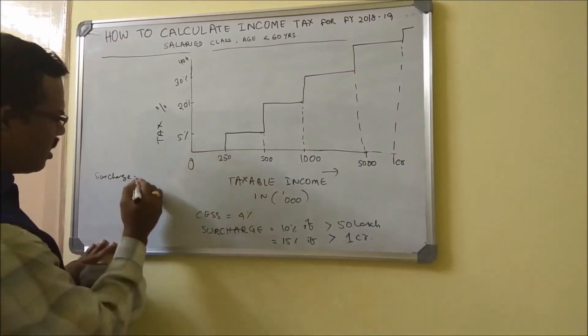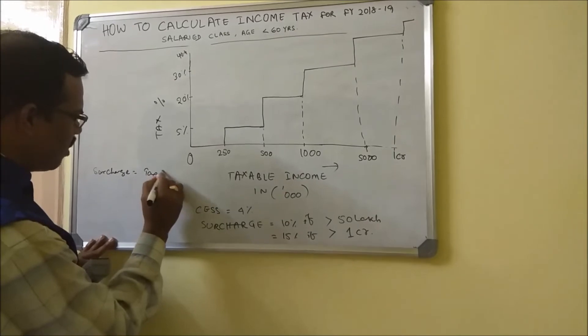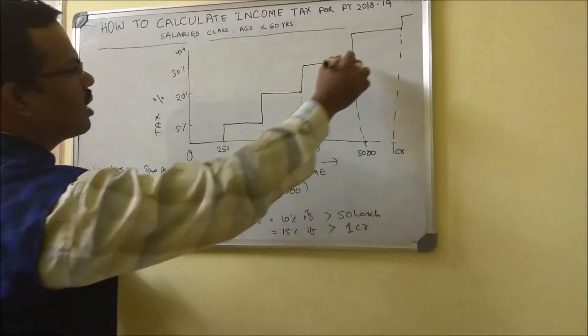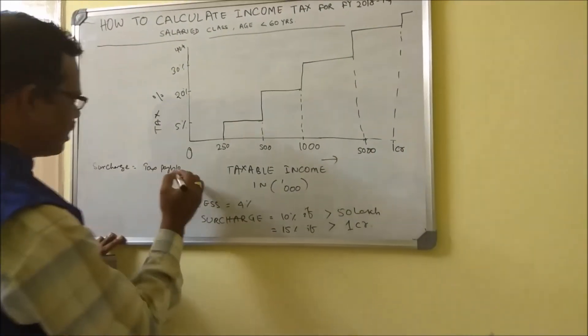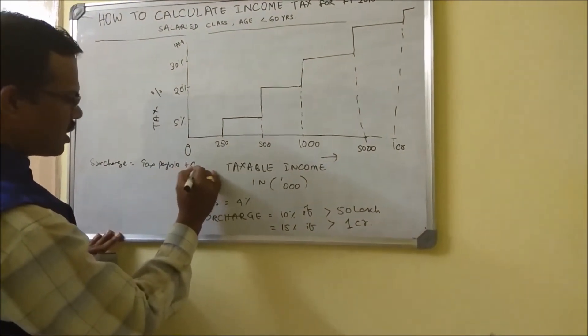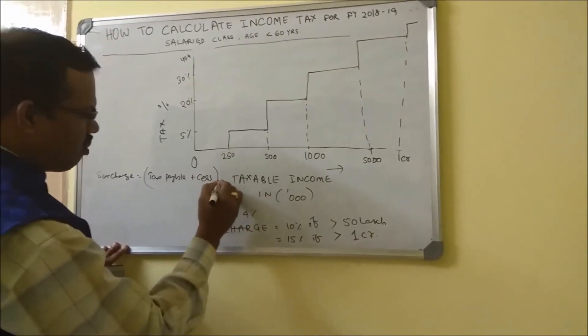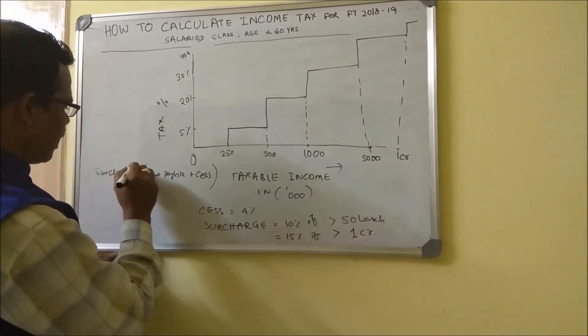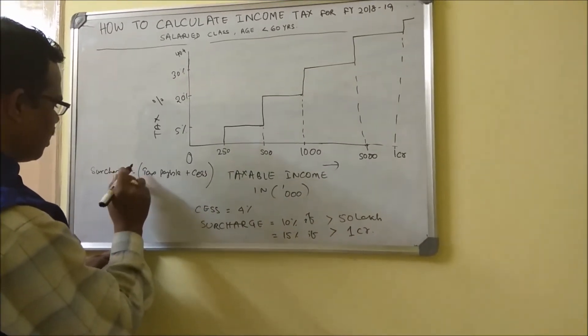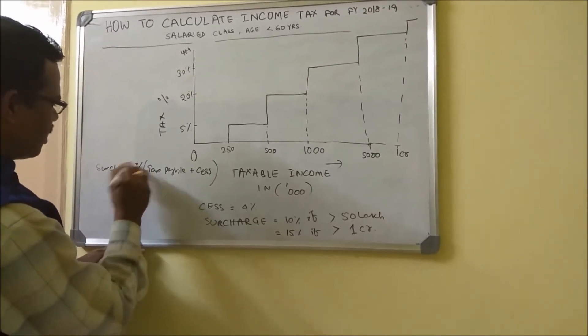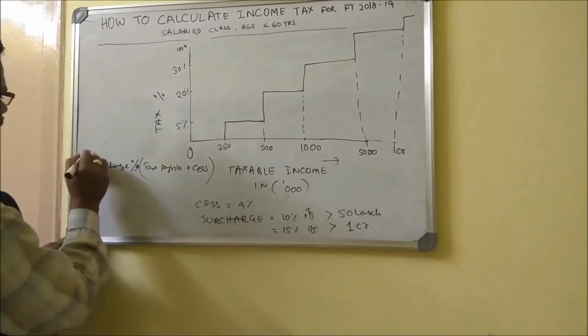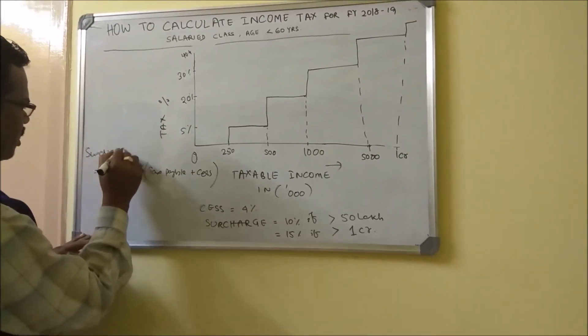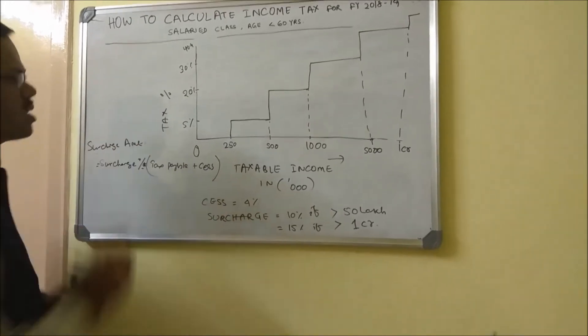Surcharge will be calculated based on the tax payable after calculating by this percentage up to this 30 percent. Tax payable plus cess, and then you have to apply the surcharge percentage. This is equal to your surcharge amount. This is how it gets calculated.